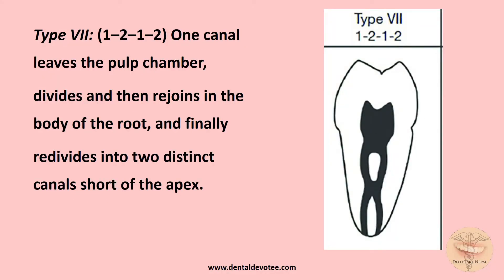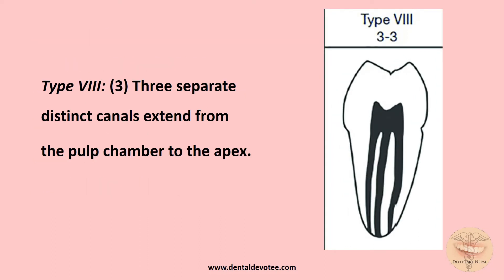Type 7 is '1-2-1-2': a single canal bifurcates, joins, and then bifurcates again. The last type, Type 8, is simply '3': three distinct canals extend from the pulp chamber separately all the way to the apex.